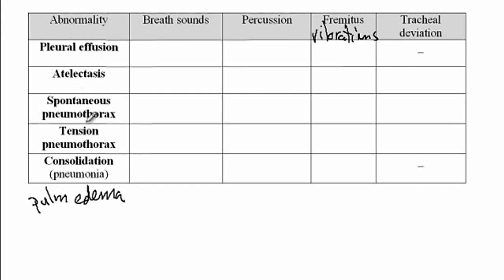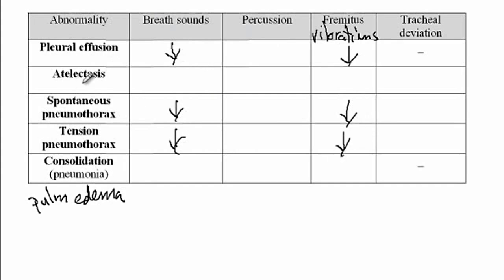With pleural effusions as well as pneumothorax, since there is either fluid or air present inside the pleural space, they interfere with the transmission of breath sounds as well as vibrations. So breath sounds as well as fremitus would be decreased in these conditions. With atelectasis, since the lungs have collapsed, there is no airflow in that area, and vibration is also lessened through the collapsed areas, so atelectasis will also decrease fremitus.